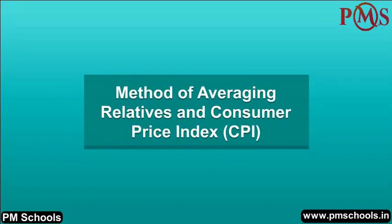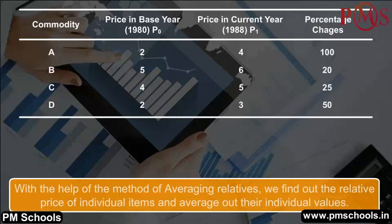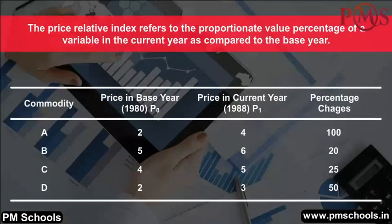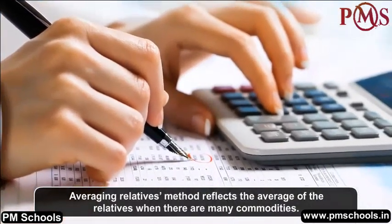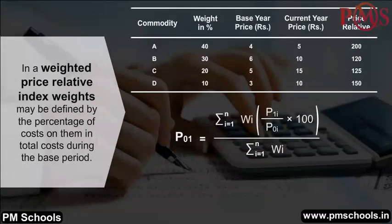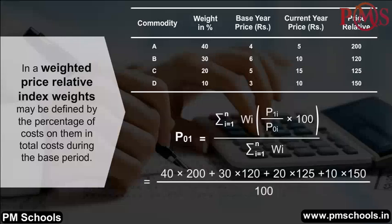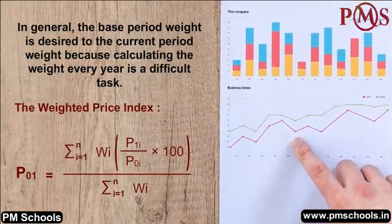Method of Averaging Relatives. With this method, we find out the relative price of individual items and average out their individual values. The price relative index refers to the proportionate value percentage of a variable in the current year compared to the base year. The weighted index of price relatives is the weighted arithmetic mean of price relatives, where weights may be defined by the percentage of costs in total costs during the base period. Base period weights are generally preferred because calculating weights every year is difficult.